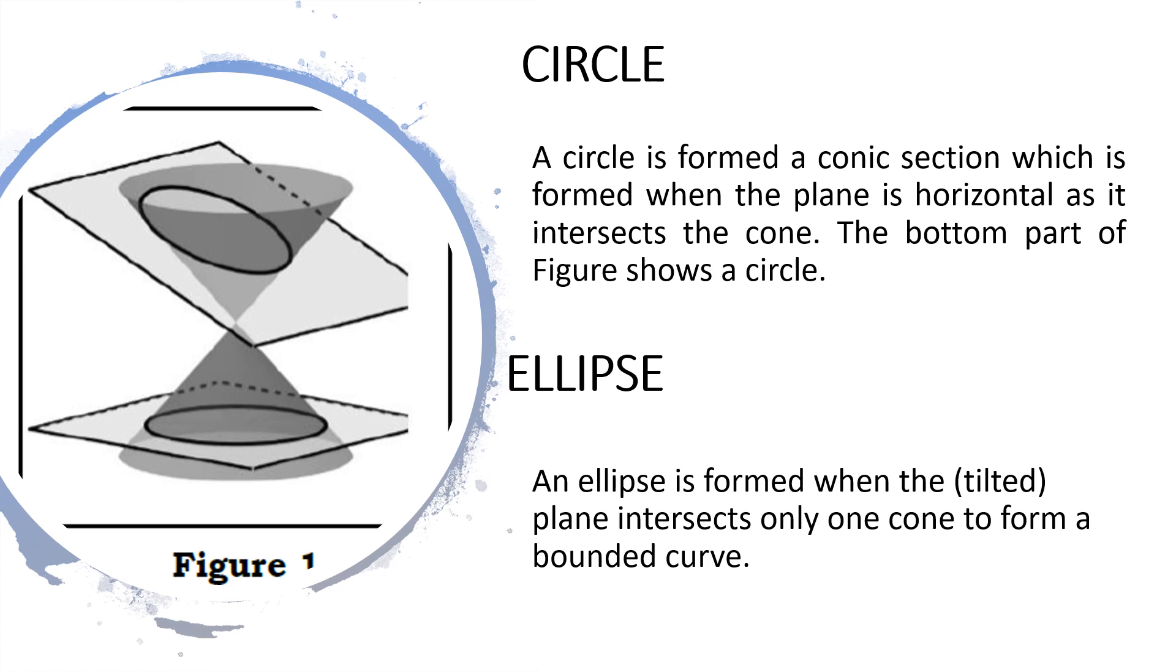Now we have an ellipse. An ellipse is formed when the plane intersects only one cone to form a bounded curve. In the figure, the top part shows the usual ellipse that you will see in this subject, while the bottom part is a circle, which is considered a special ellipse.